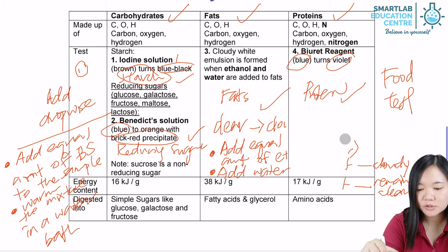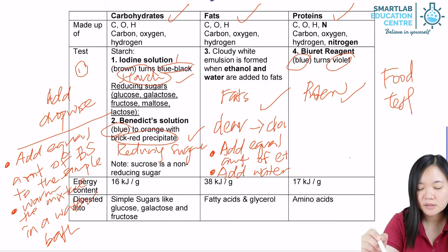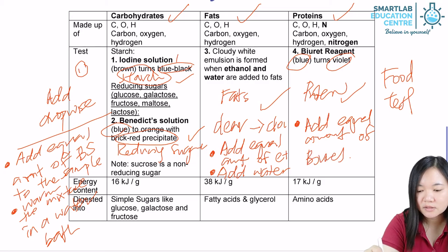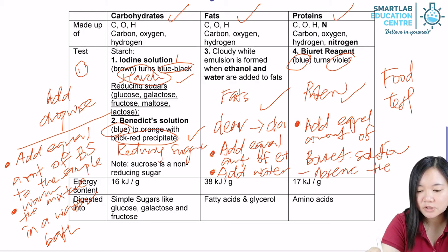For protein, there is just one step — very easy. You add an equal amount of Biuret solution to the sample. Then you straight away observe the color change.